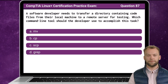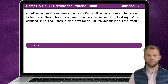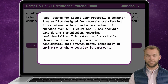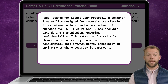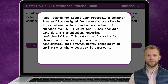Question 87. A software developer needs to transfer a directory containing code files from their local machine to a remote server for testing. Which command line tool should the developer use to accomplish this task? The answer is C: SCP. SCP stands for Secure Copy Protocol, a command line utility designed for securely transferring files between a local and a remote host. It operates over SSH and encrypts data during transmission, ensuring confidentiality. This makes SCP a reliable choice for transferring sensitive or confidential data between hosts, especially in environments where security is paramount.